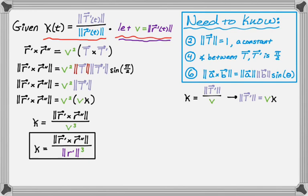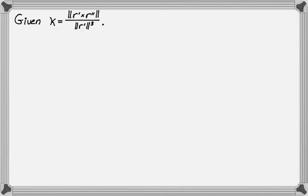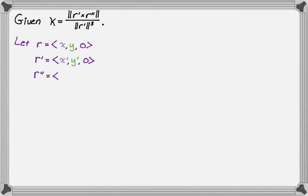That formula is my go-to — I'm pretty comfortable taking cross products in the process of finding r prime, and I can then find the magnitude of r prime. There are two more formulas for two-dimensional things that we're going to work out. For a 2D curve, I'll parameterize r as (x, y, 0). From there, r prime is (x prime, y prime, 0) and r double prime is (x double prime, y double prime, 0).